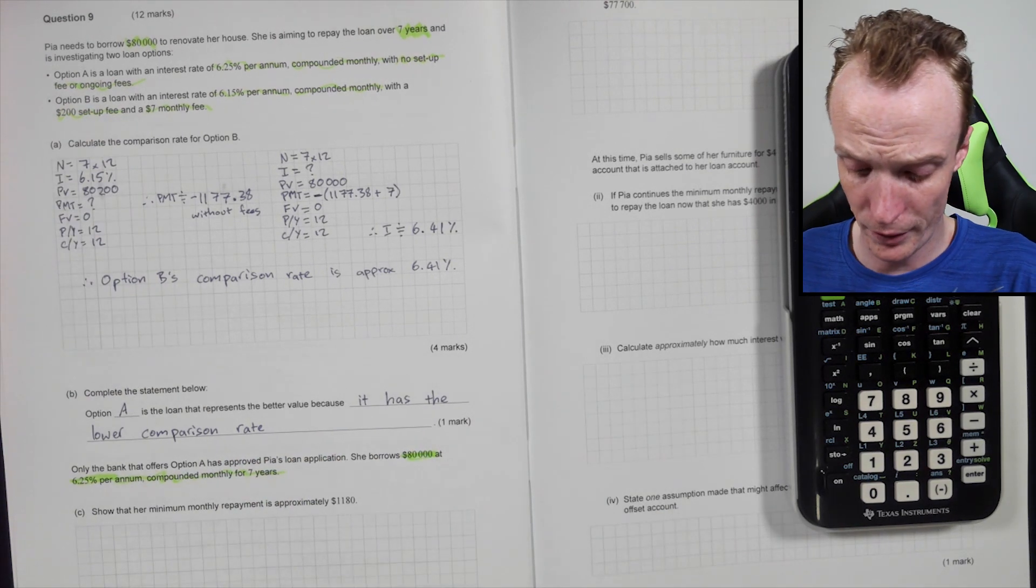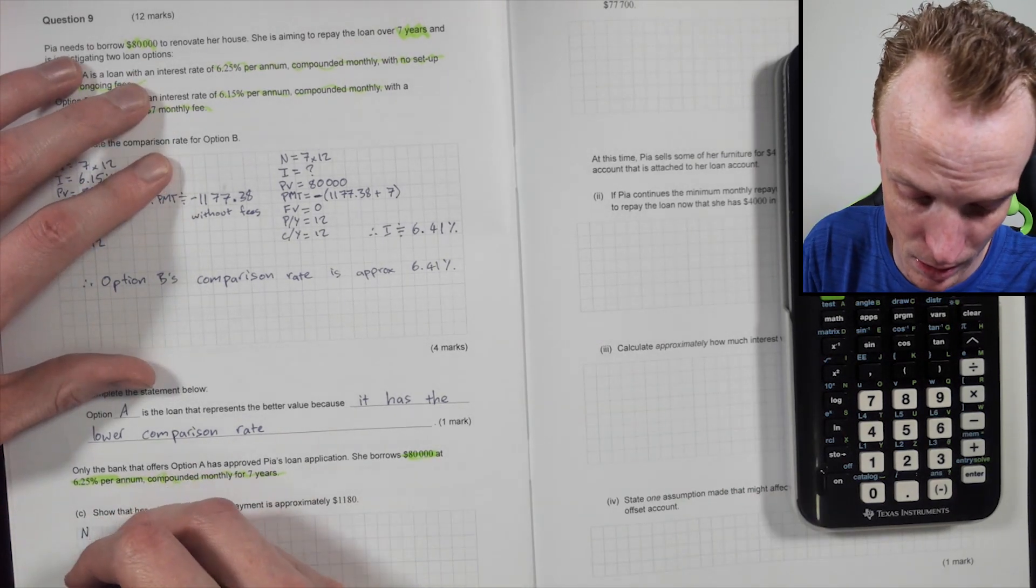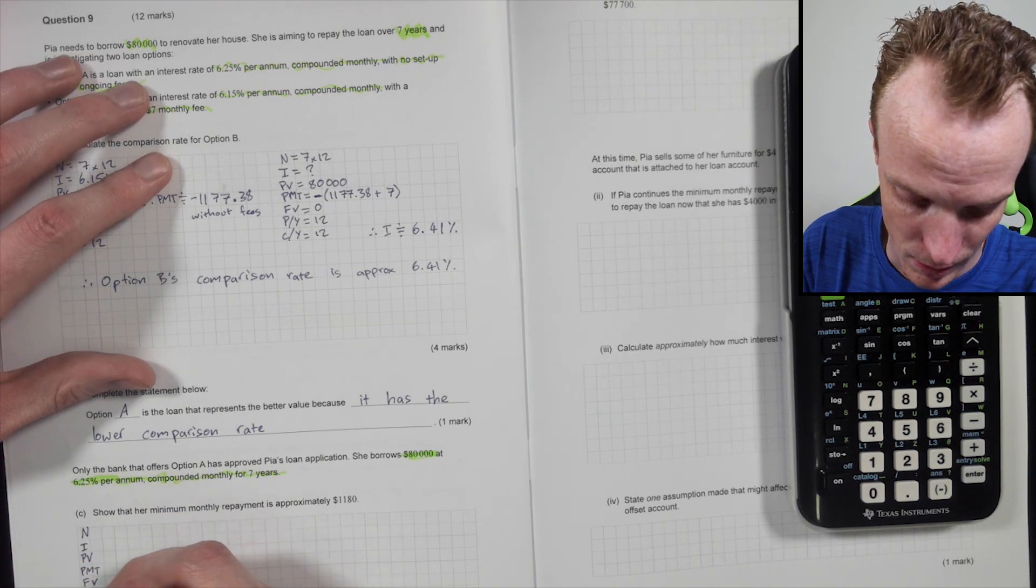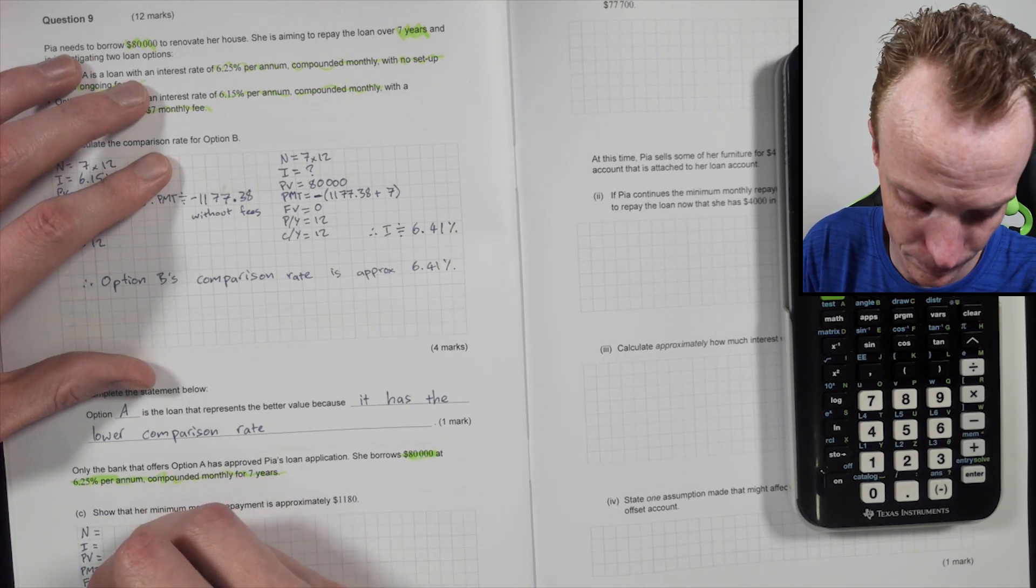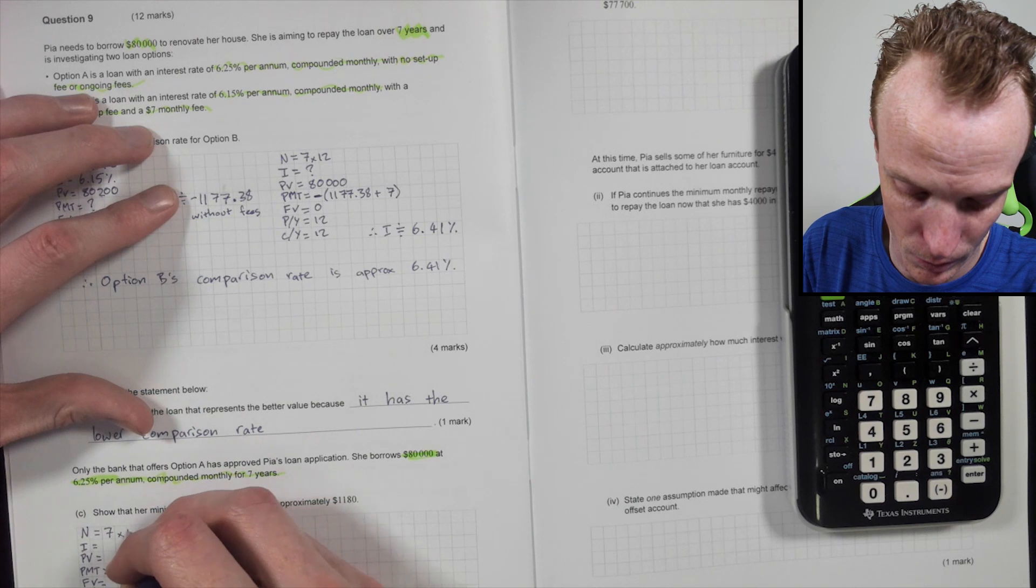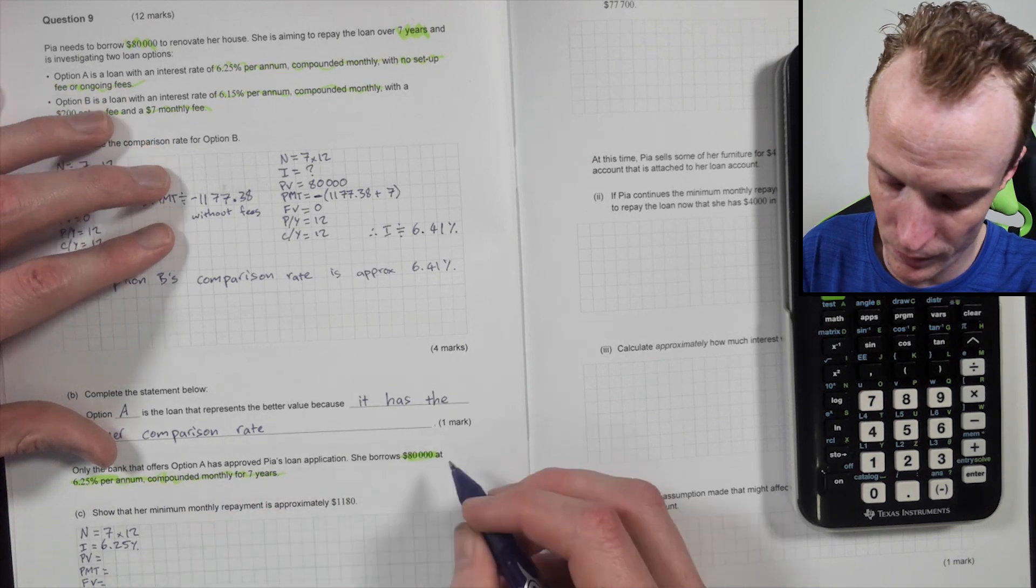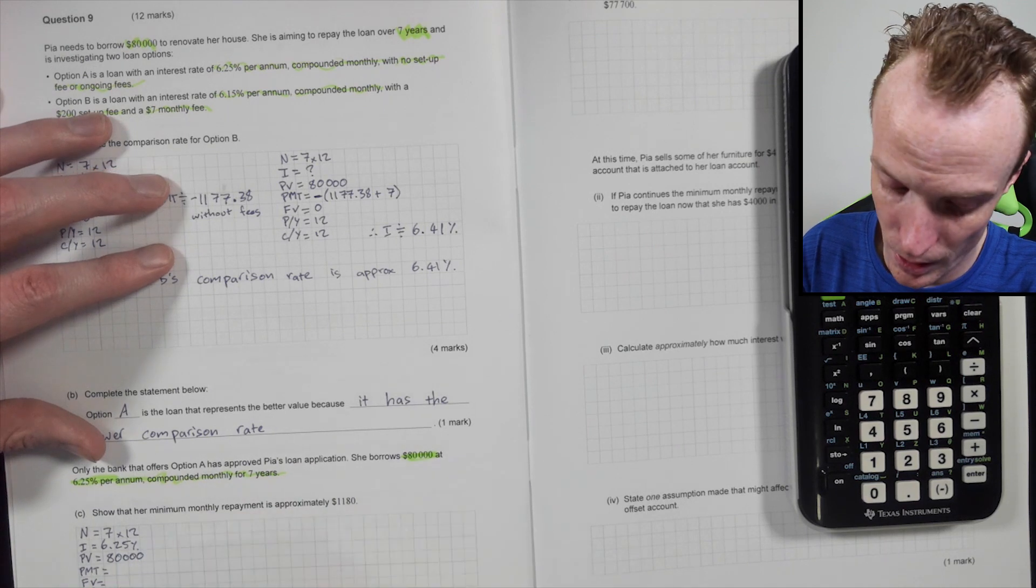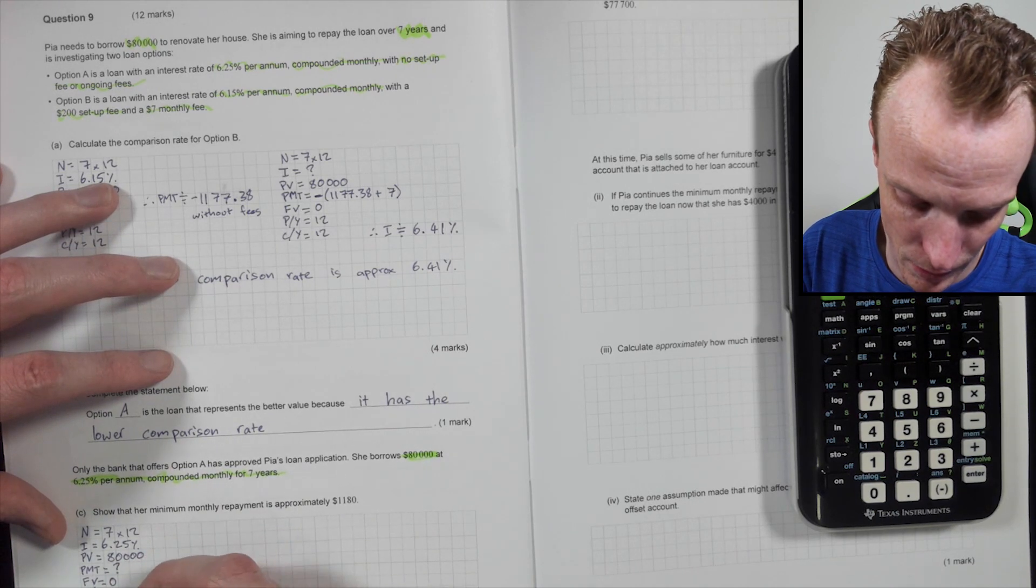Show that the minimum of a month's repayment is approximately $1,180. So this would be one of those N, I, PV, PMT, FV, PY, CY, because it's a compound interest loan. It's seven years. It's compounding monthly, isn't it? So seven by 12. The interest rate is 6.25. The present value is 80,000. I'm borrowing that. So it'll be a positive. PMT. Have we, no, that's what we're calculating. Future value, I'm paying it off and then it's 12 and 12.